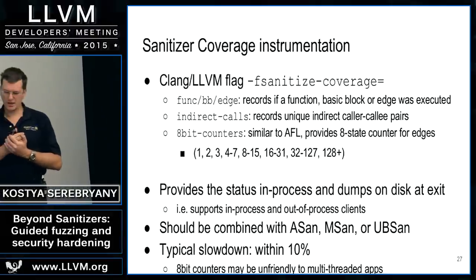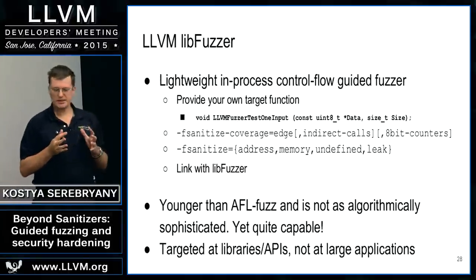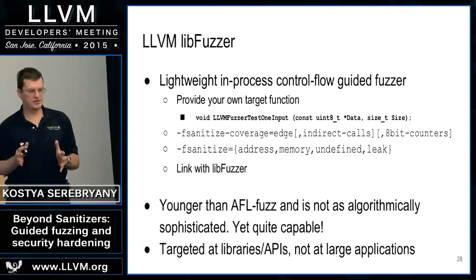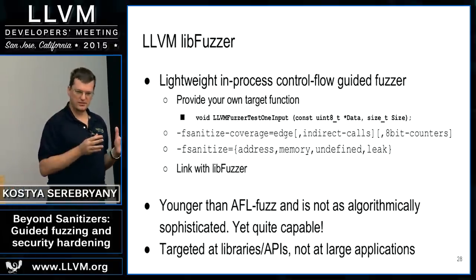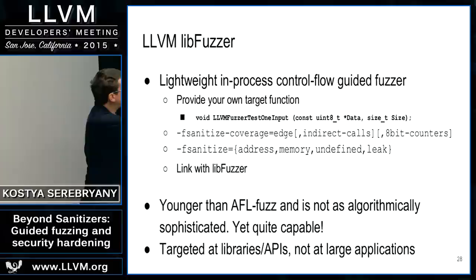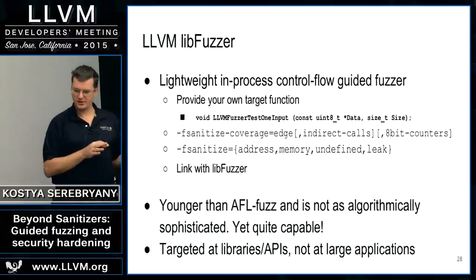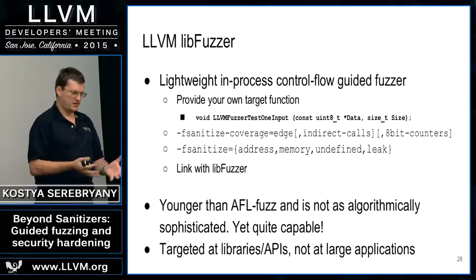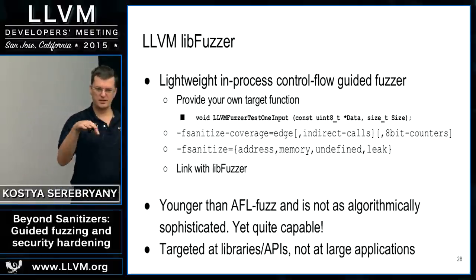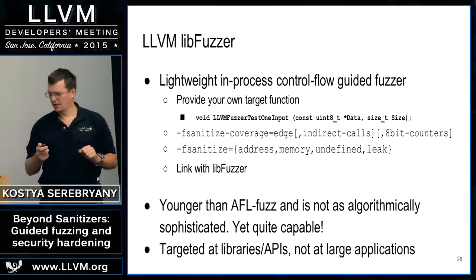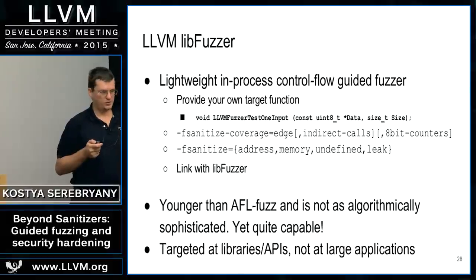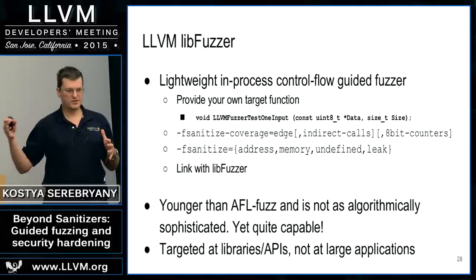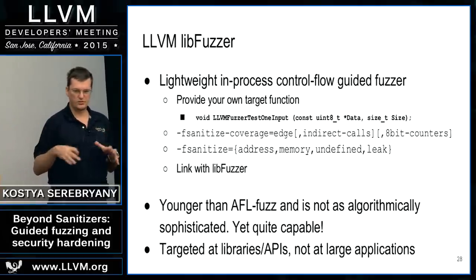Back to LibFuzzer: it is a library that implements lightweight, in-process, control-flow-guided fuzzing, and I hope it is really easy to use. All you need is to provide a single target function that takes an array of bytes as a parameter, and do something interesting with your API — for example, parse your data format from those bytes. You then build your library with two sets of flags: sanitizer coverage flags, and at least one sanitizer such as address sanitizer. Finally, link with the LibFuzzer library.